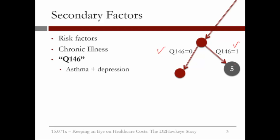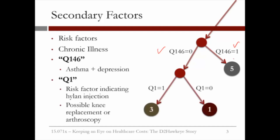If the patient has asthma and depression, then it's bucket five. If not, then we consider a particular indicator for a Hyland injection, which is an indication of a possible knee replacement or arthroscopy. If this indicator is equal to one, then it's bucket three. If the indicator is equal to zero — not present — then it's bucket one.